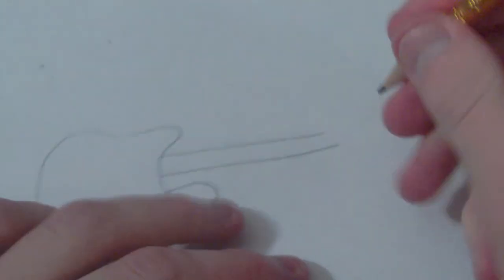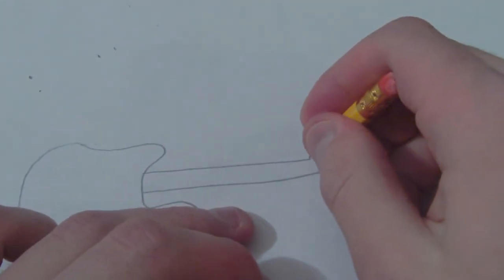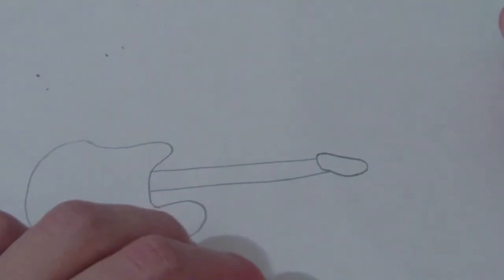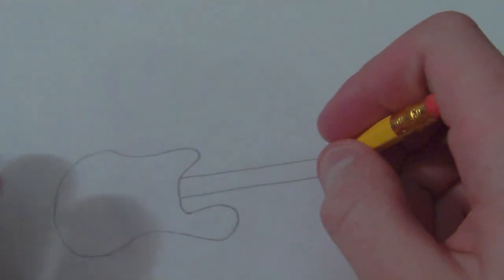Alright. Now we're just going to draw this little piece up in here. I think I might have done that upside down, but we'll just deal with it for now. We'll just go with the flow.